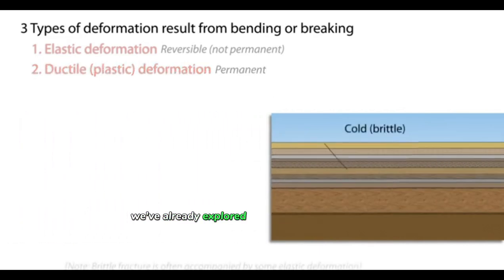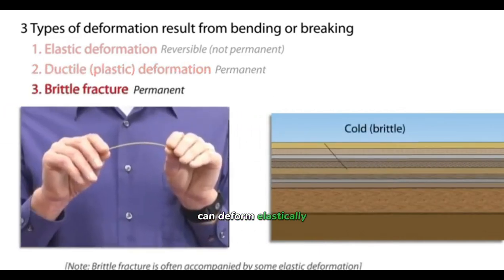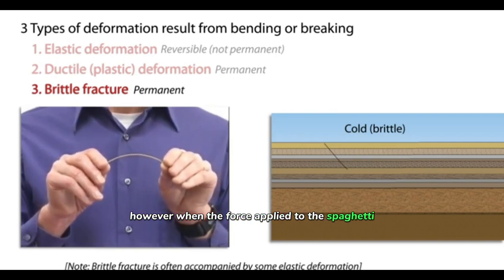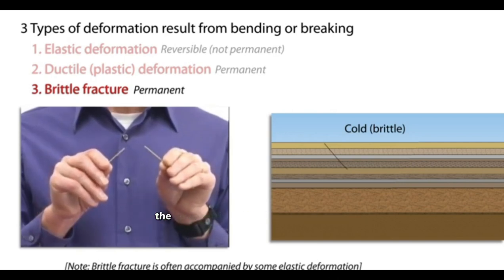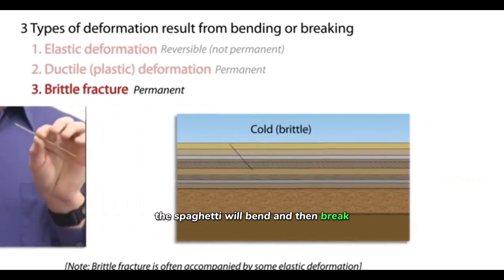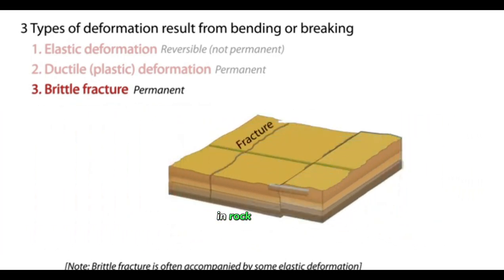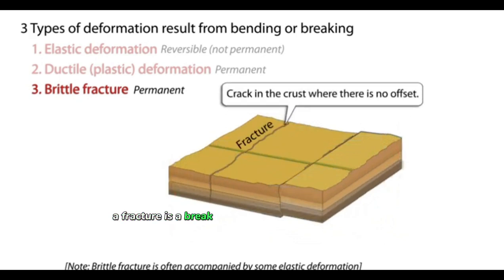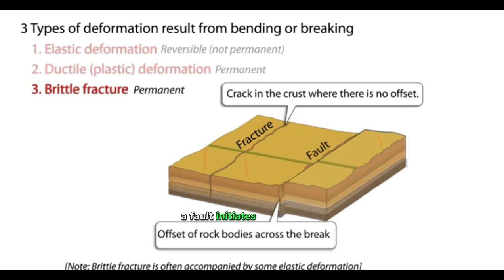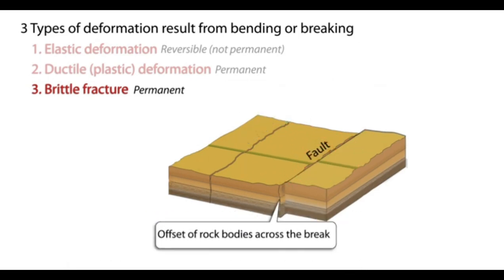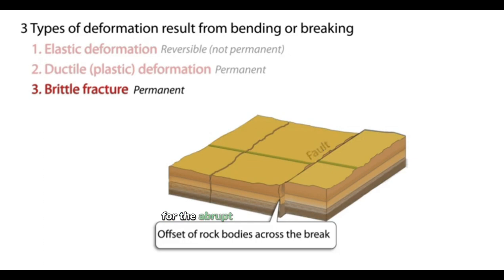We have already explored how uncooked spaghetti can deform elastically. However, when the force applied to the spaghetti exceeds its strength limit, the spaghetti will bend and then break. This type of permanent deformation is called brittle deformation. In rock bodies, a fracture is a break that has experienced no movement along the crack. In contrast, a fault initiates on a fracture, but one side shifts relative to the other side. Most faults are locked by friction, unable to move, except by elastic deformation or the abrupt jerk of an earthquake.